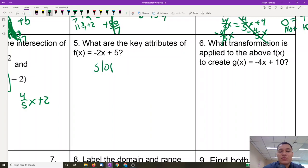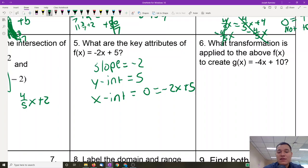What are the key attributes of this? That just means describe it, like the slope is equal to negative 2. The y-intercept is equal to 5. The x-intercept is equal to, well, you'd have to solve for it: 0 = -2x + 5. To find the x-intercept, you put zero for y. Then you solve. So the x-intercept is equal to 5 over 2 for x.